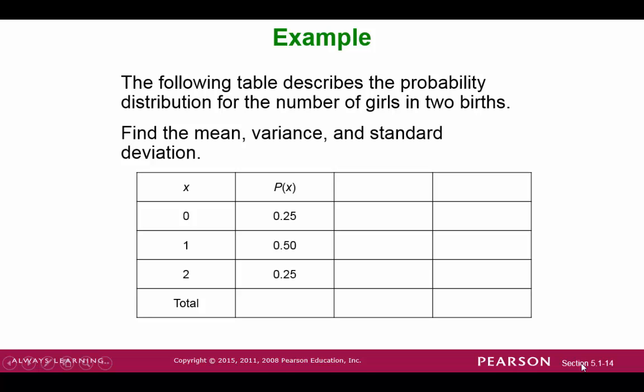We're asked to find the mean, variance, and standard deviation. So we would extend the table to help us find the combinations of x and p of x. So we can just do the multiplication across the tables and use the formula. And then down at the totals, we can add them up. So the sum of x times p of x is 1. And then the sum of that more complicated x minus mu squared times p of x formula is 0.5.